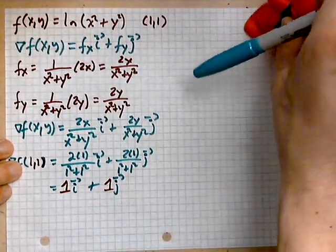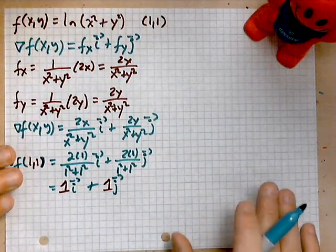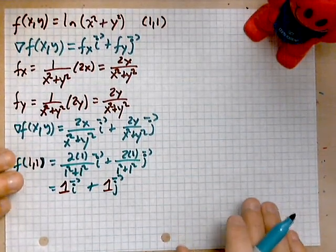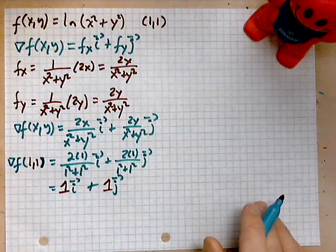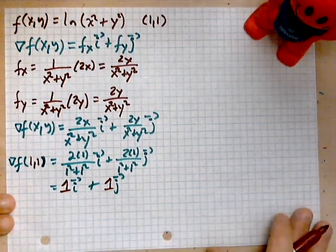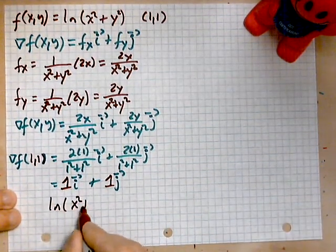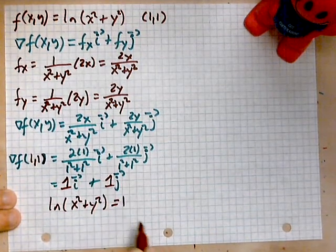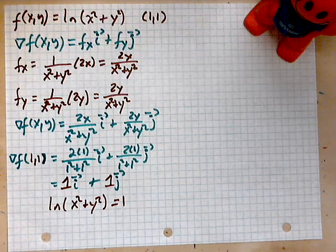Now we will sketch a contour curve with a function. So this function looks pretty complicated at first, right? Because if you take it and you set it to a constant, what you have is something of the following form: ln(x² + y²) equals 1. Well, that's not very helpful when you first look at it. So you've got to take some other approach.